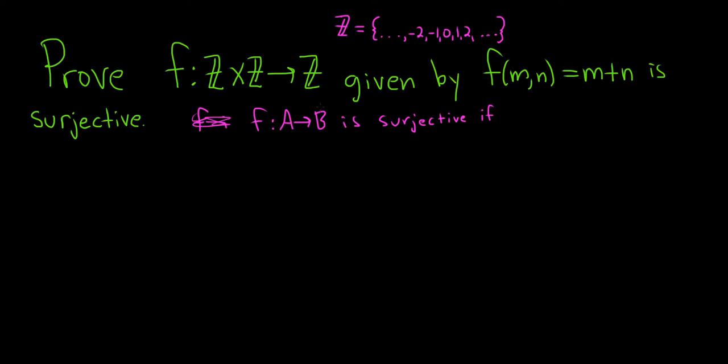So for all, this means for all, little b in, this means in, capital B, there exists, backwards E means there exists, an a in, that means in, A, such that f of a is equal to b. So this is the definition of what it means for a function to be surjective.